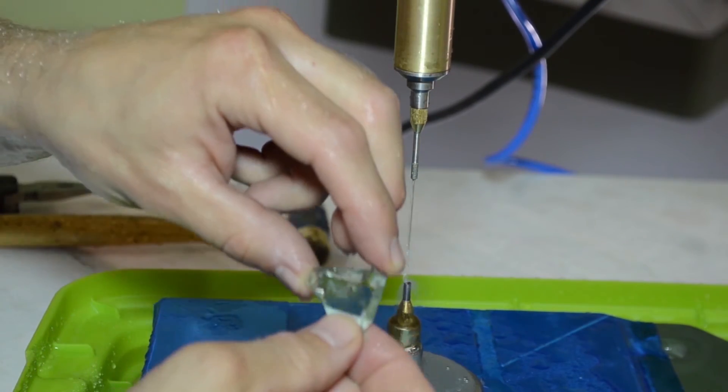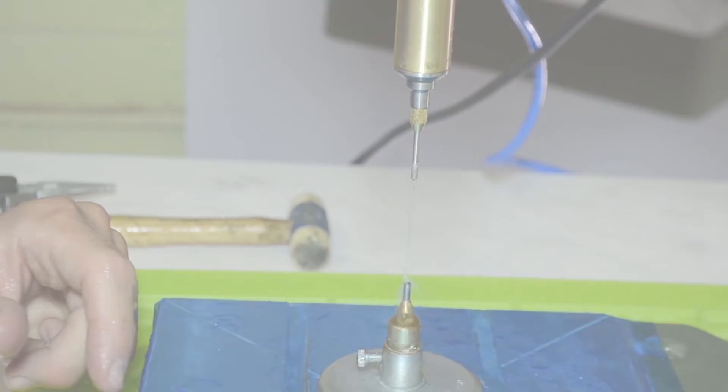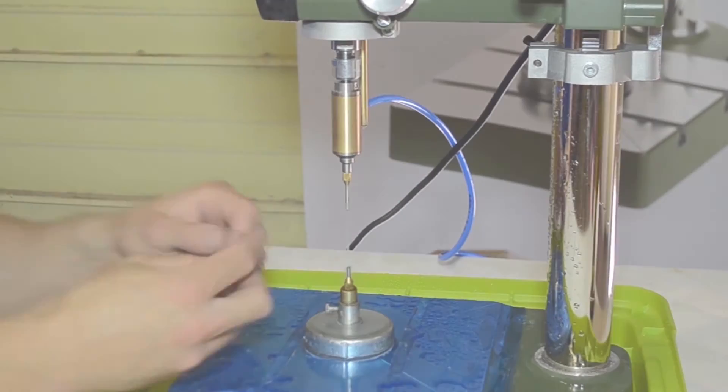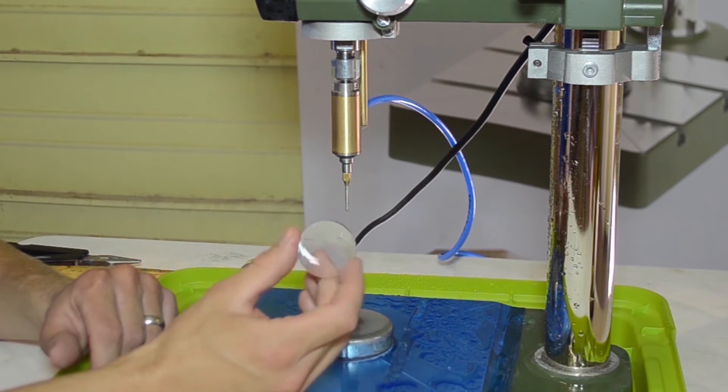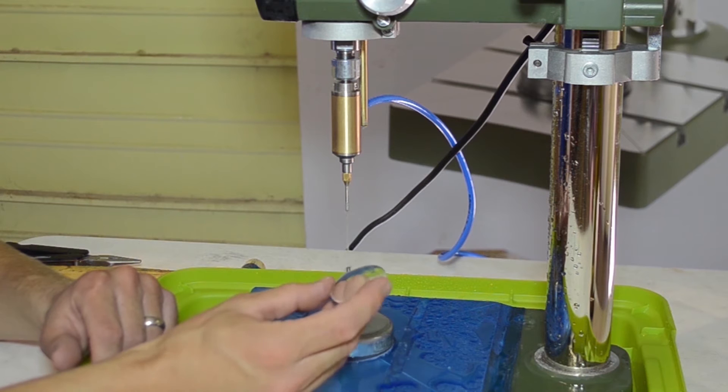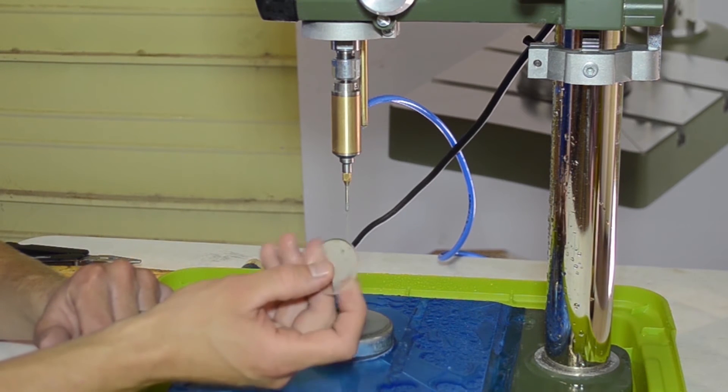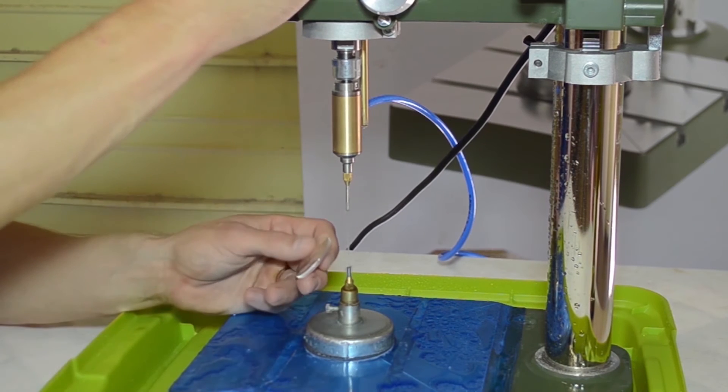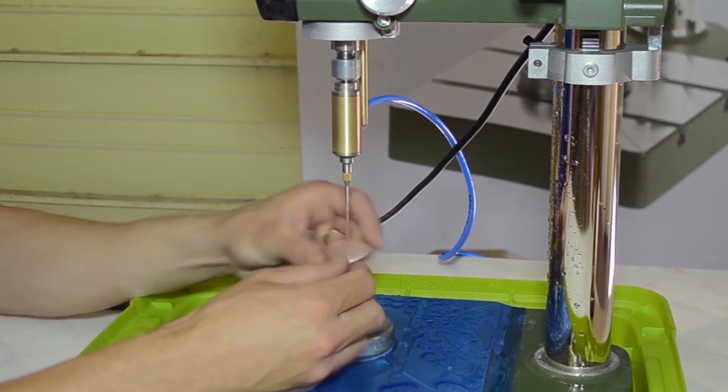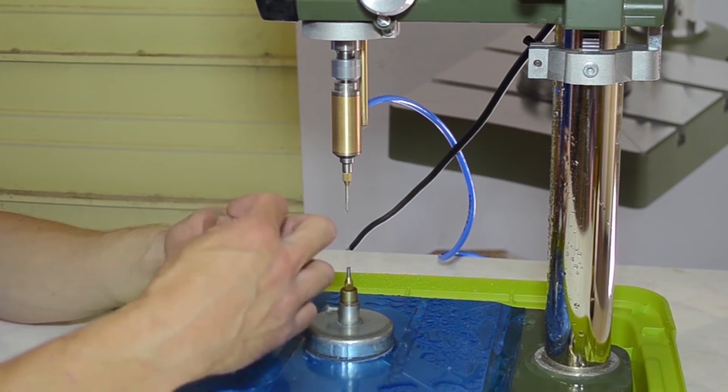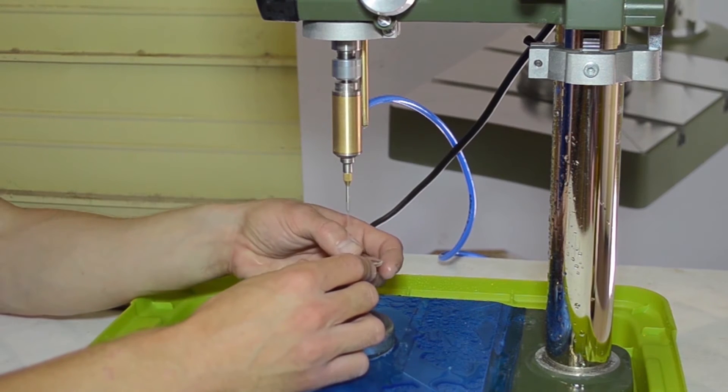All right now I'm going to drill this is just a piece of it looks like a lens of some sort, it's just a disk of glass. I don't even know where it came from but I thought it'd be fun to drill because you could put a jump ring on it, make it a pretty cool pendant or maybe the start of an earring.